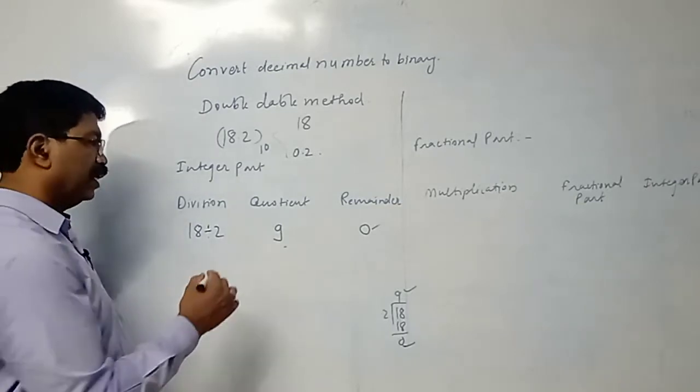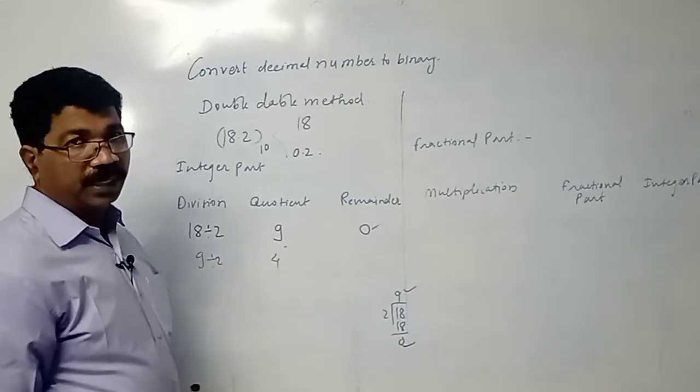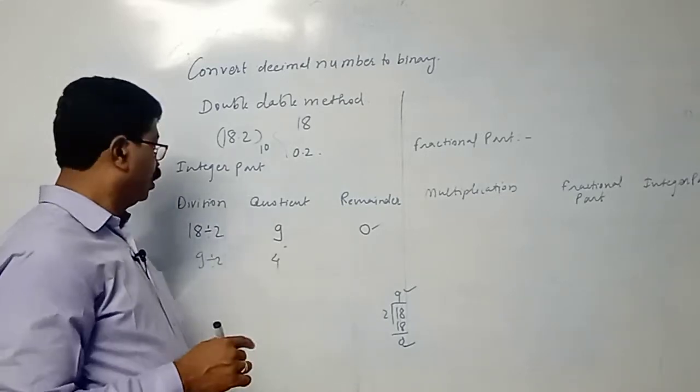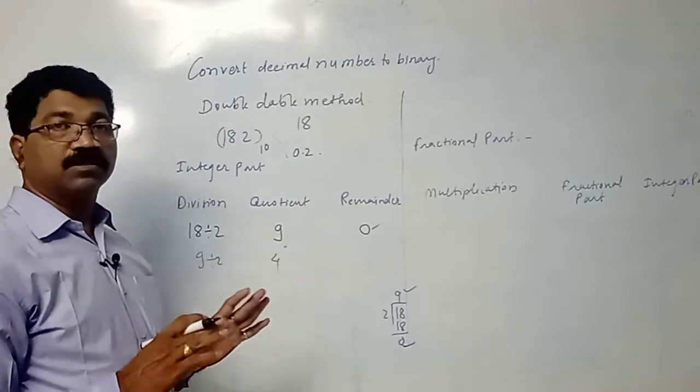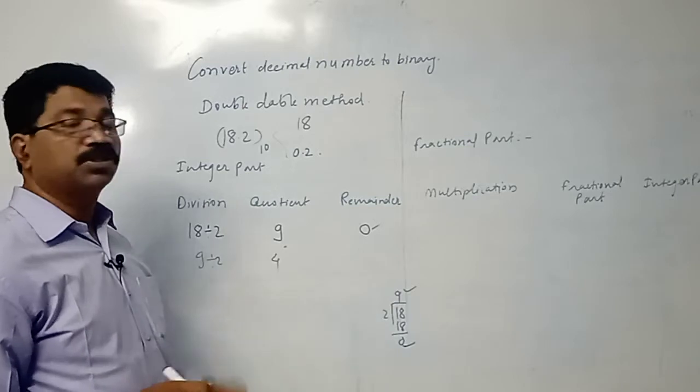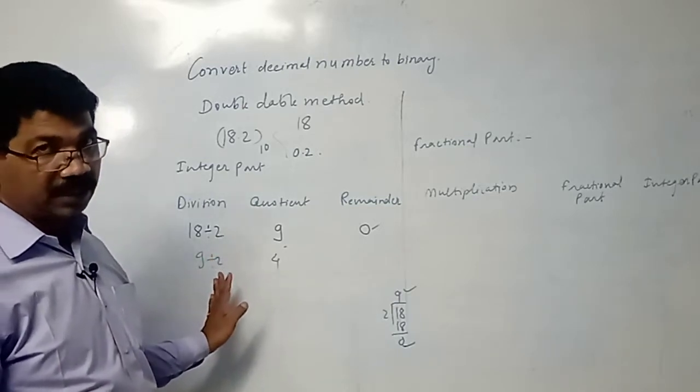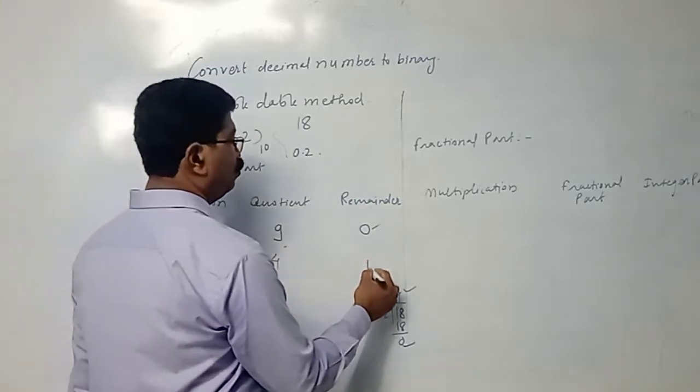Then again we will divide 9 by 2. Two fours are 8. We will not divide so that the quotient will remain fraction, but we have to divide it so that the quotient will remain integer. So two fours are 8, and the remainder will be 1.